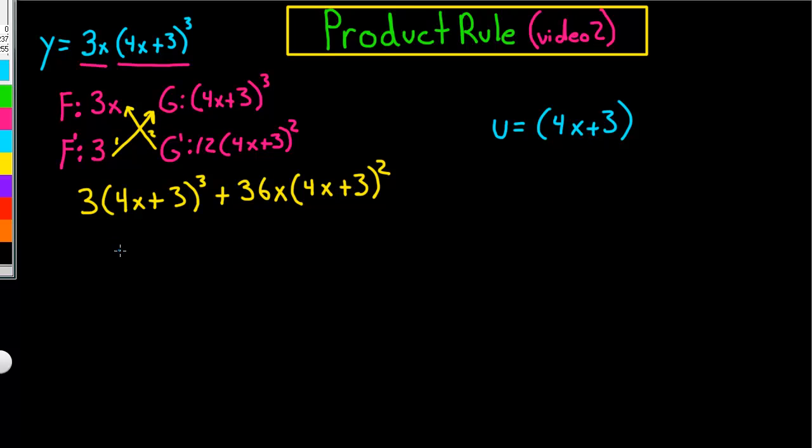Alright, so we're going to rewrite that and it's going to be 3 times u cubed plus 36x times u squared. Now, we can simplify this even further. And how we do that is, we figure out what both of these have in common.